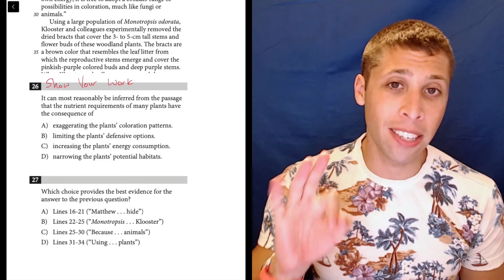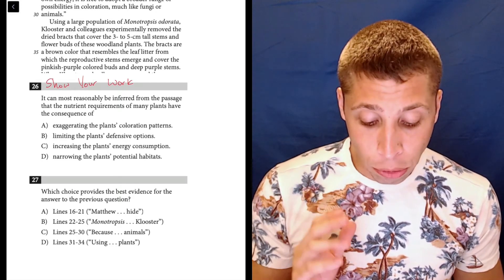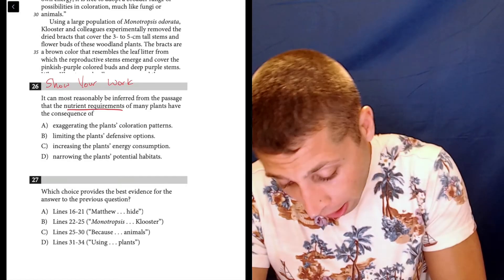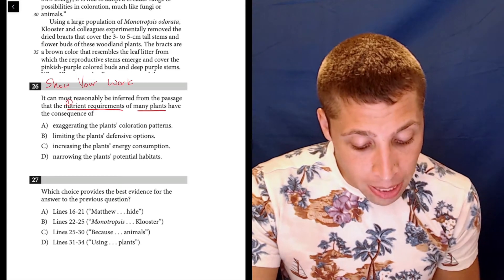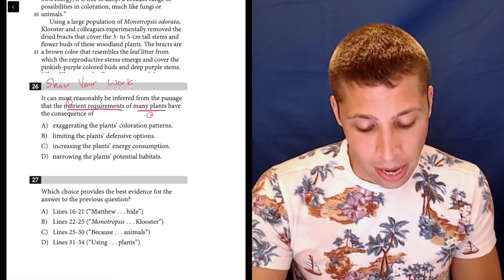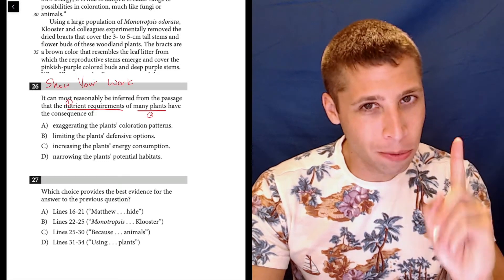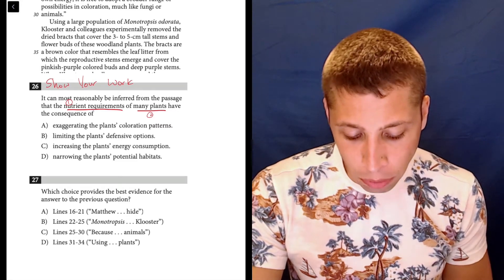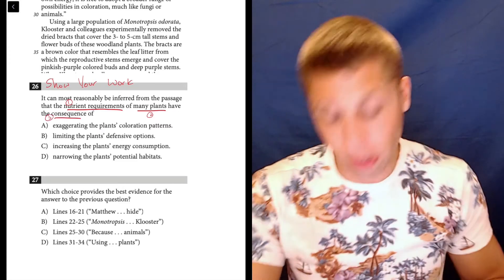There are three key ideas that I notice in this particular question. It can most reasonably be inferred from the passage that the nutrient requirements—that's one thing I'm going to want to pay attention and look for—of many plants, and that's number two, and that's a little strange because this passage isn't about many plants. It's about one particular plant. The nutrient requirements of these many plants have the consequence of whatever, so there's three things.